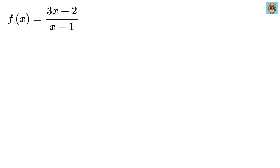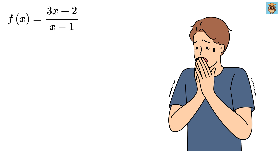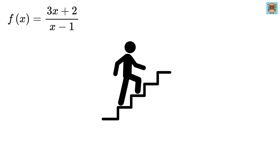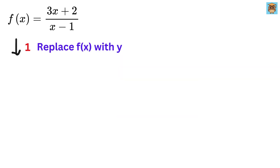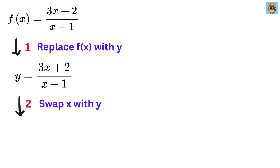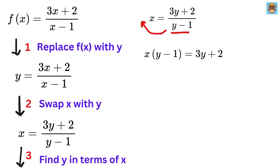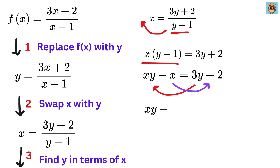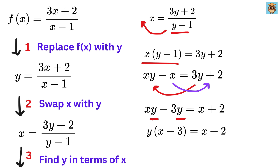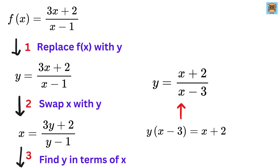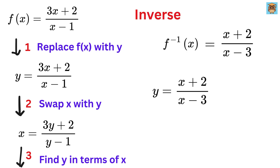Finally, let f of x equal 3x plus 2 over x minus 1. It might seem difficult, but if you follow the same steps it won't be. Replace f of x with y. Swap x and y. Find y in terms of x by eliminating the fraction — multiply both sides by y minus 1 to get x times y minus 1 equals 3y plus 2. Expanding gives xy minus x. Rearrange to get xy minus 3y equals x plus 2. Factor out y to get y times x minus 3 equals x plus 2. Solving for y gives y equals x plus 2 over x minus 3. That is the inverse of this f of x.